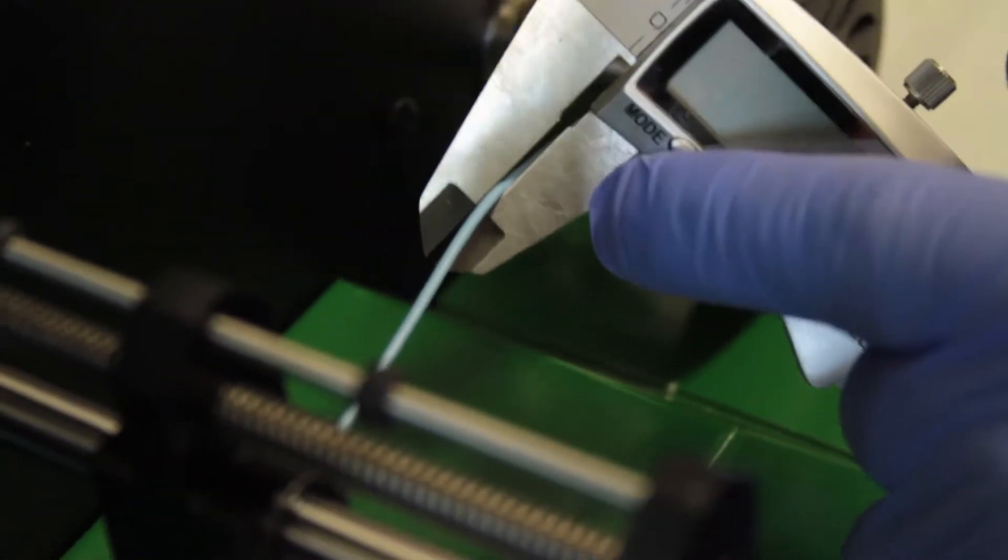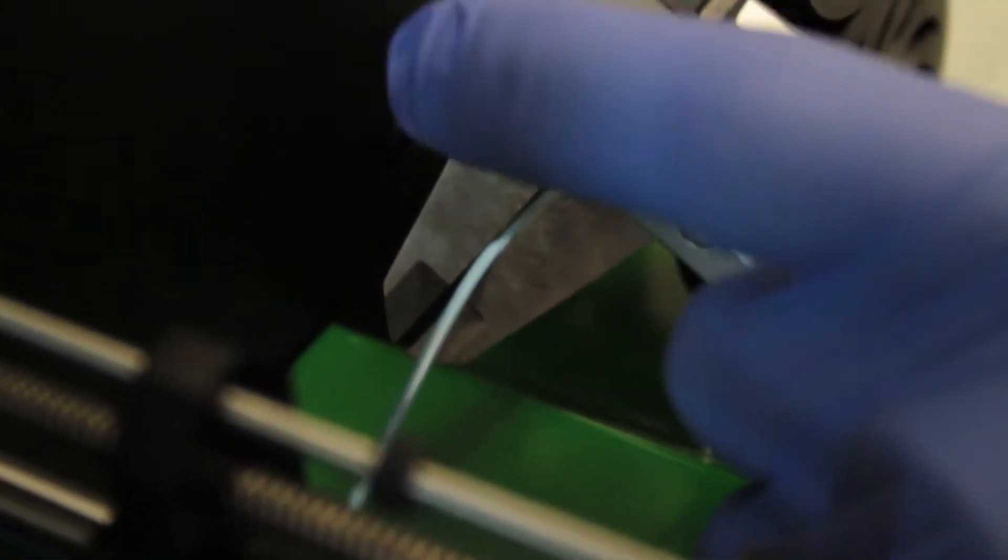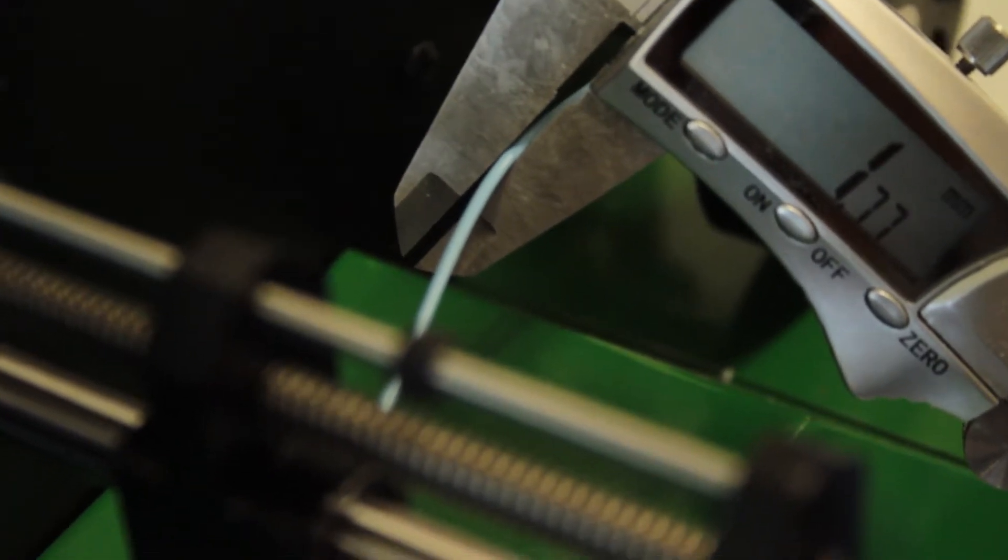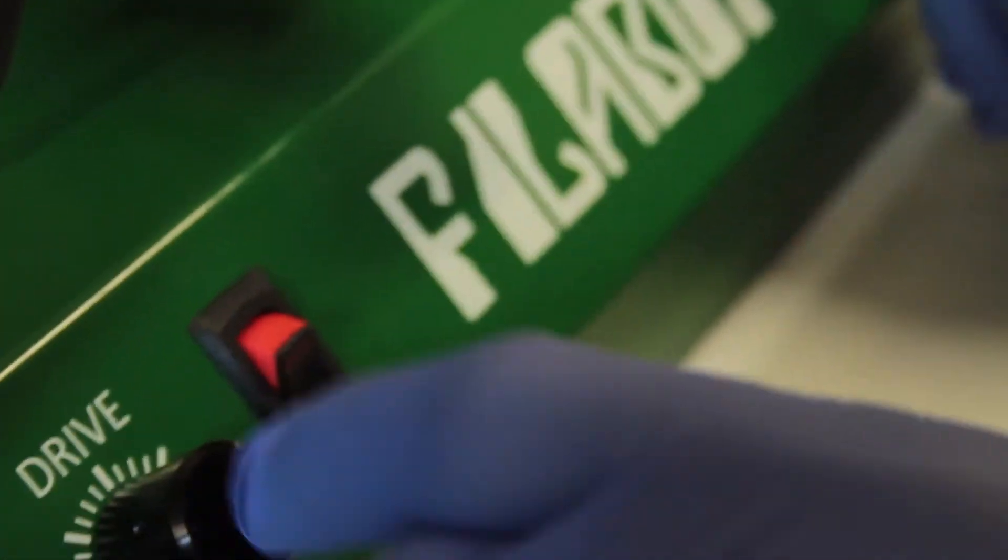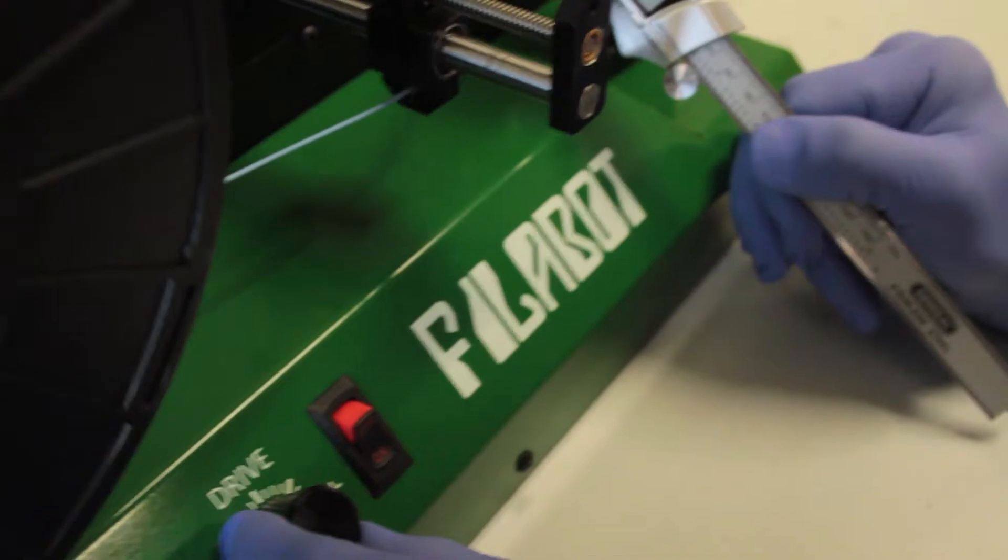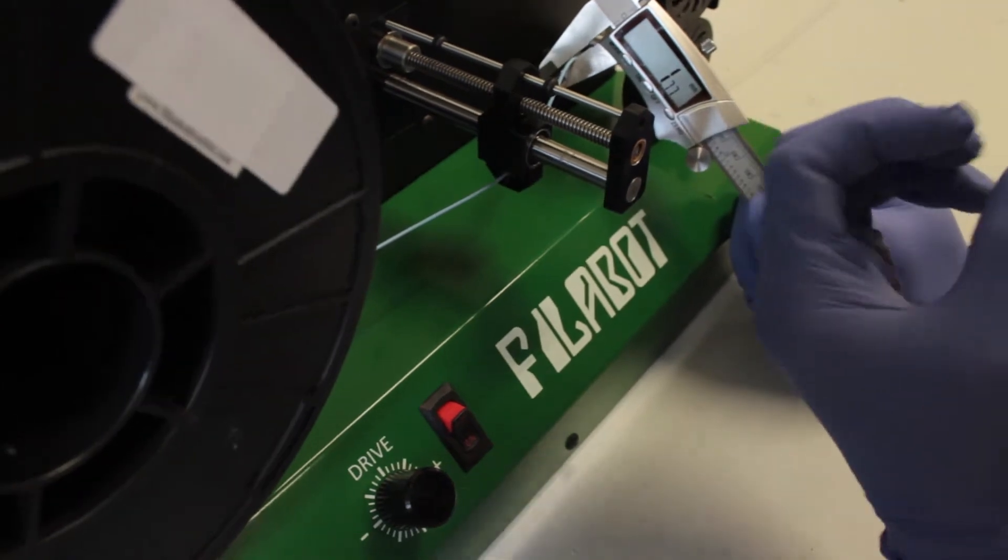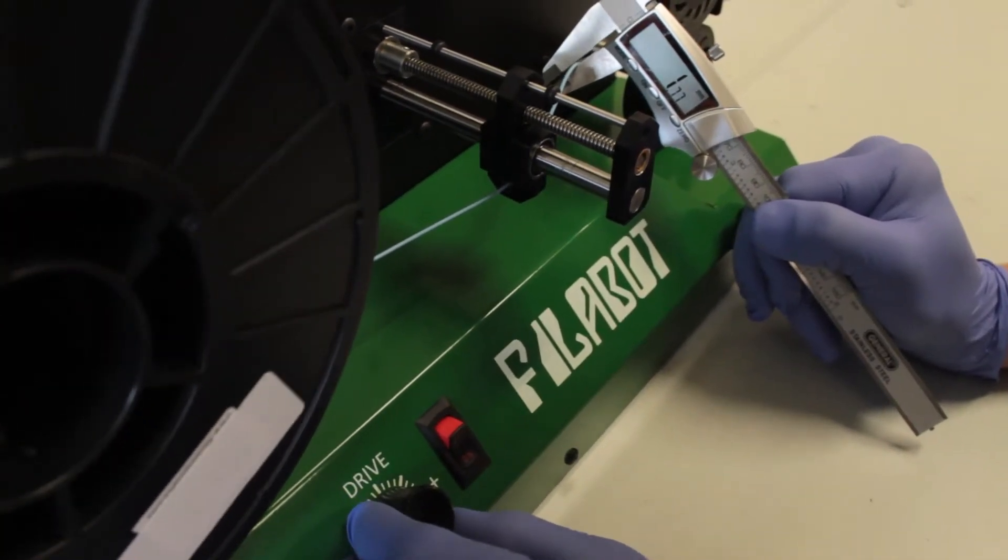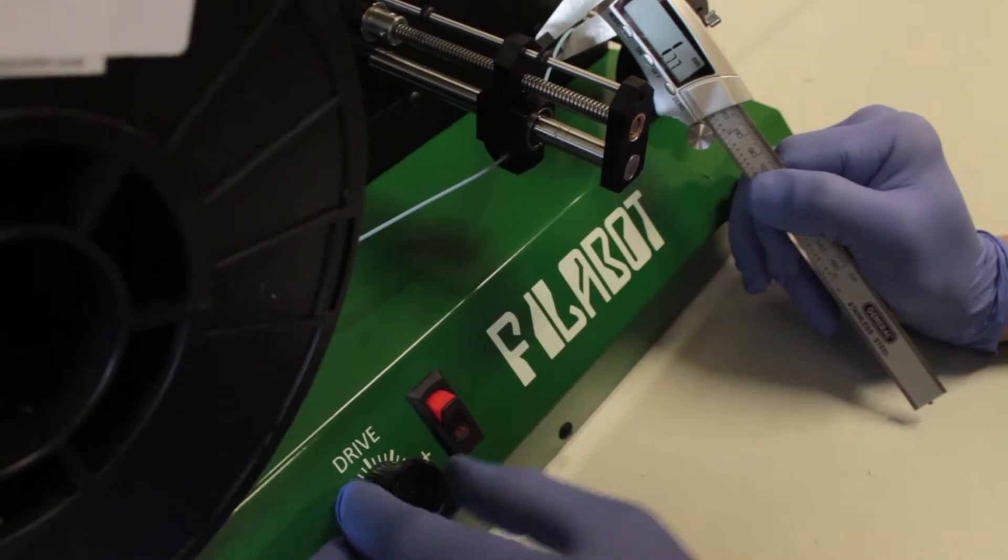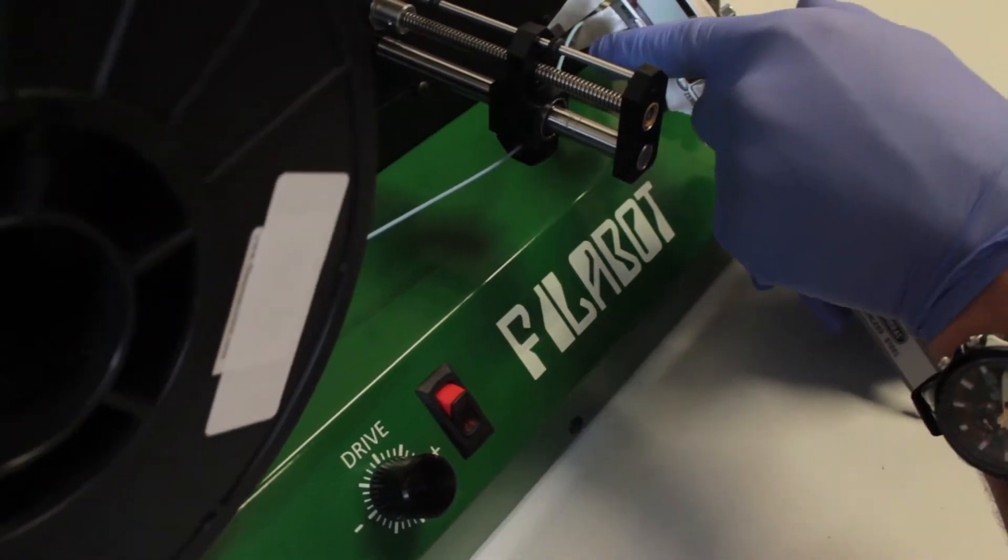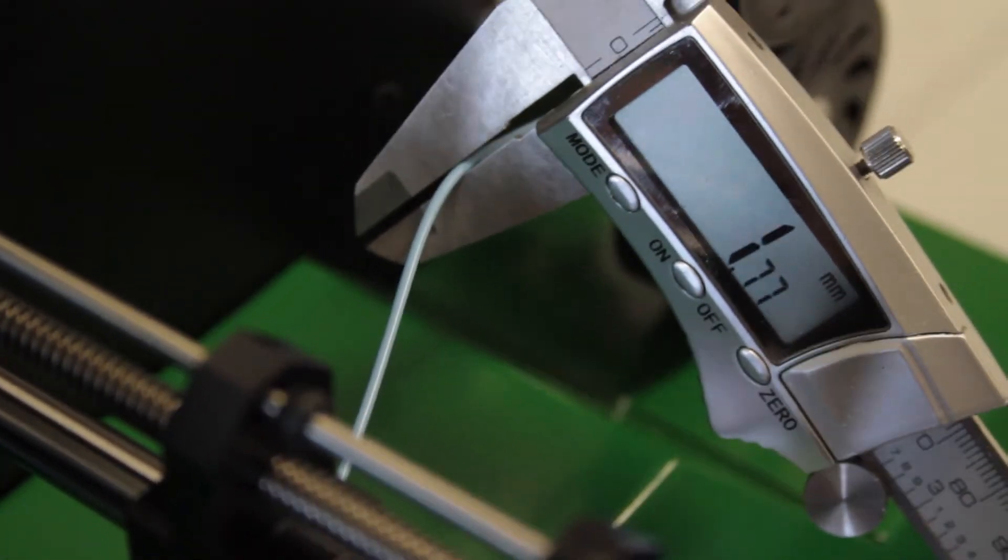You're going to want as little of a gap as possible between the edge of the filament and the edge of the wall of the top edge of the caliper. Basically what you're going to do is use the drive to decrease the speed, so that it's pulling less and you're getting a thicker diameter. You're going to want to have about 30 seconds to a minute in between each reset setting, so it gives time to feed you the diameter that changed in accordance to the differentiation in speed.